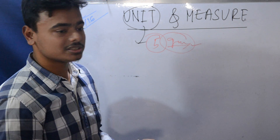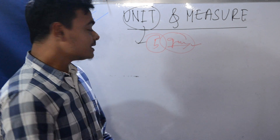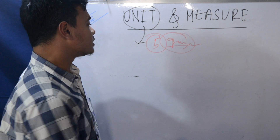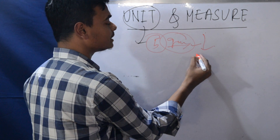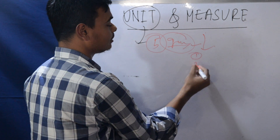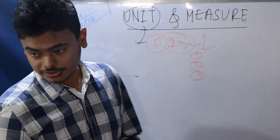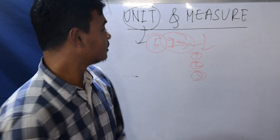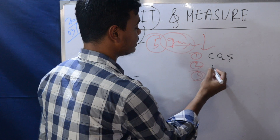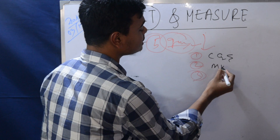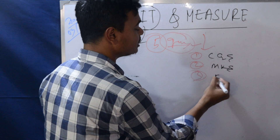This is the system of units. There are different systems of units. First is CGS. Next is also CGS — we will clarify the distinctions.